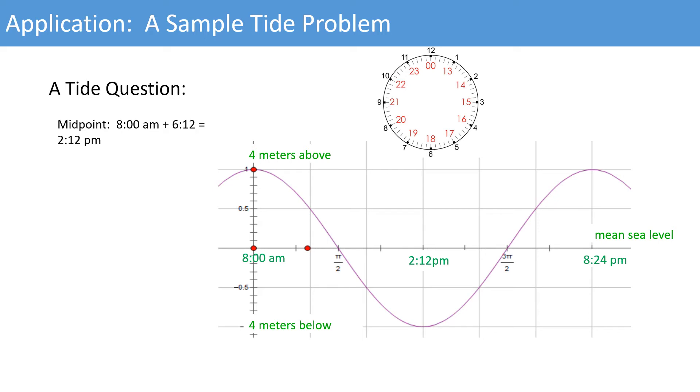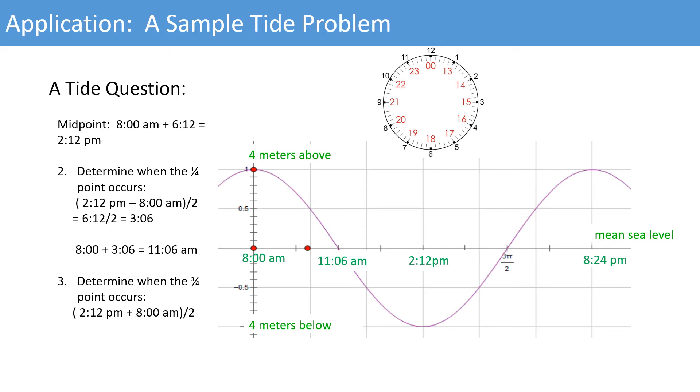Now that we know the midpoint at 2:12 p.m., we want to determine the one-quarter point. 2:12 p.m. minus 8 o'clock a.m. divided by 2 is 3:06. So if we start at 8 o'clock and add 3:06 hours, we get 11:06 a.m. For the three-quarter point, 2:12 plus 8 o'clock a.m. divided by 2 gives us 5:06 p.m.